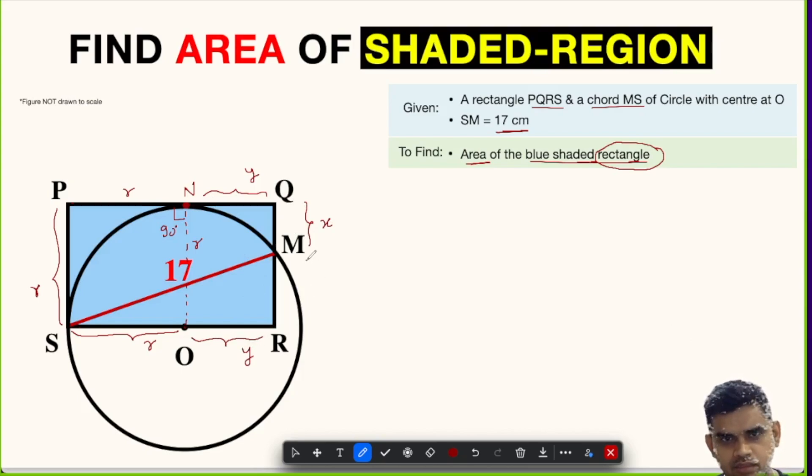What about this distance MR? From Q to R, this length is R. We have this, and from Q to M it is X. So this will be R minus X. So we have three unknowns: the radius R, Y, and X. The only known thing is the length of this chord SM, which is 17 units.